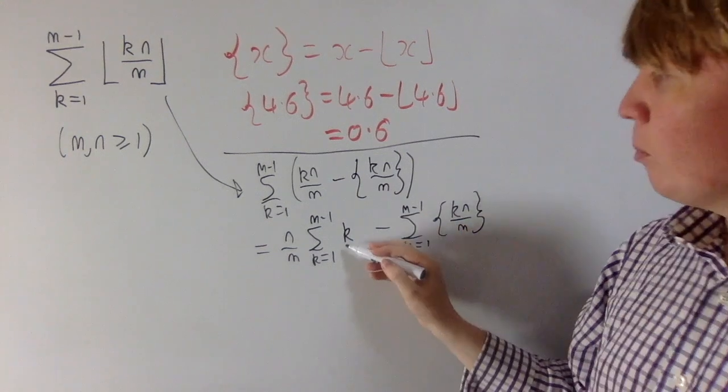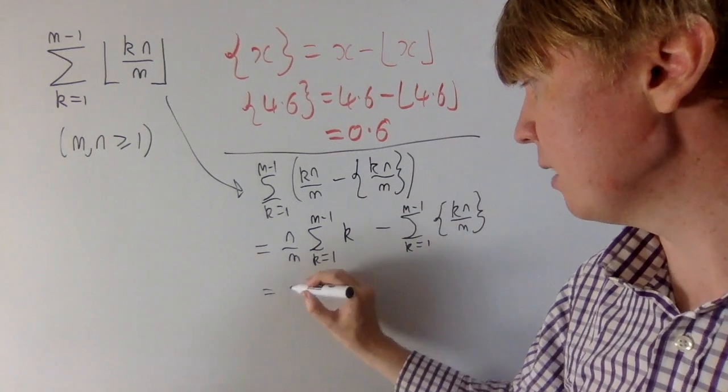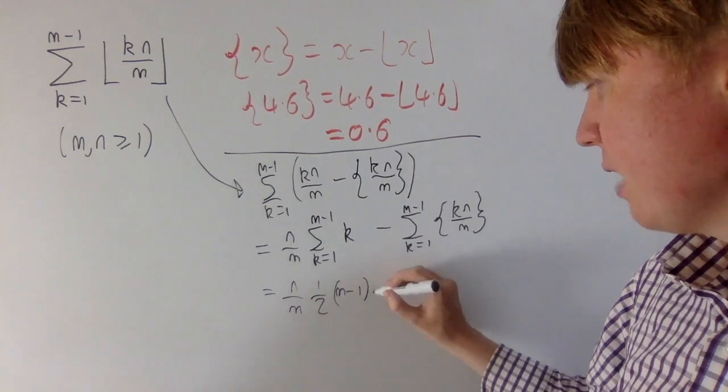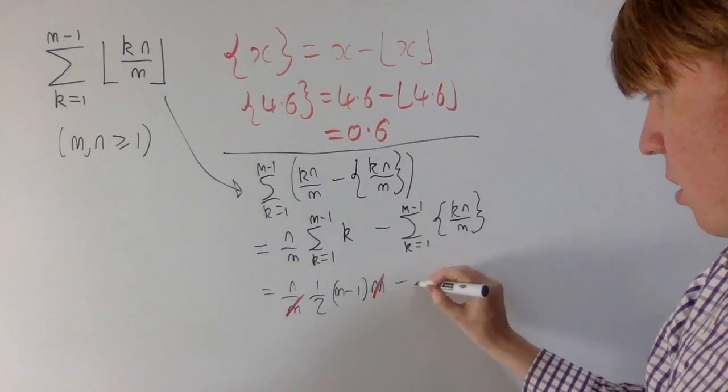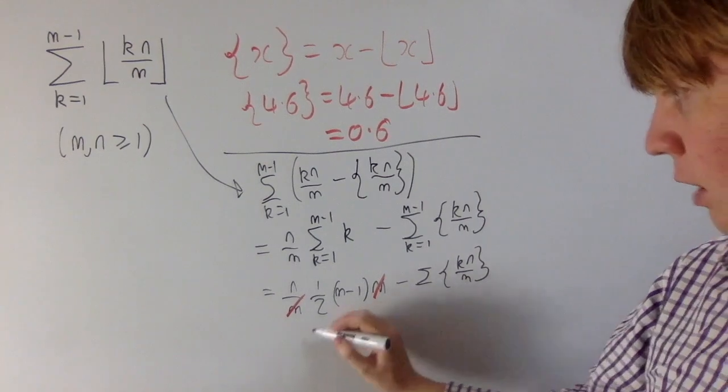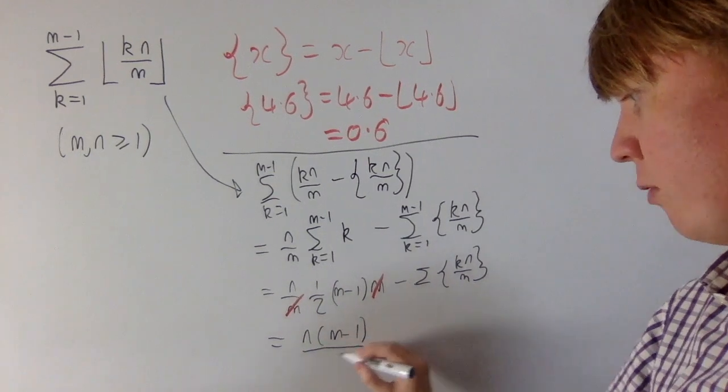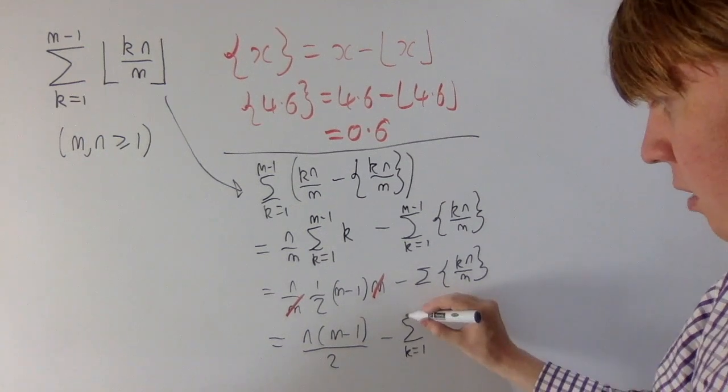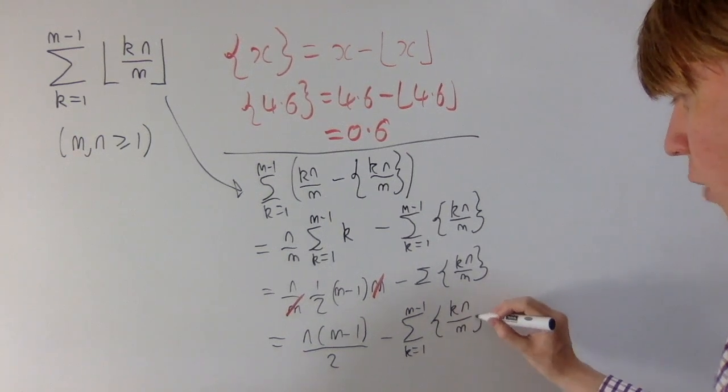So here we're summing over k, so we can take out this factor of n over m, and then we're left with a nice sum from k equals 1 to m minus 1 of just k. Then we're also left with the sum from k equals 1 to m minus 1 of our decimal part of k n over m. We'll deal with this term later. The sum of the integers from 1 up to m minus 1, there's a nice formula we can apply. So we get n over m times 1 half times m minus 1 times m, and the m's cancel. We can tidy this up to n into m minus 1 over 2, and now the main challenge is evaluating this second sum of the fractional part of k n over m.